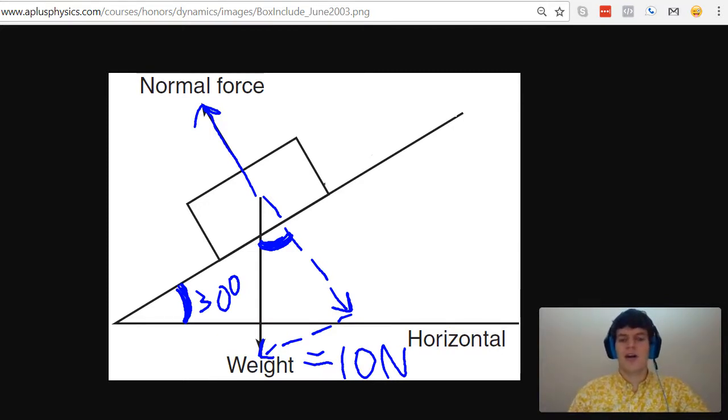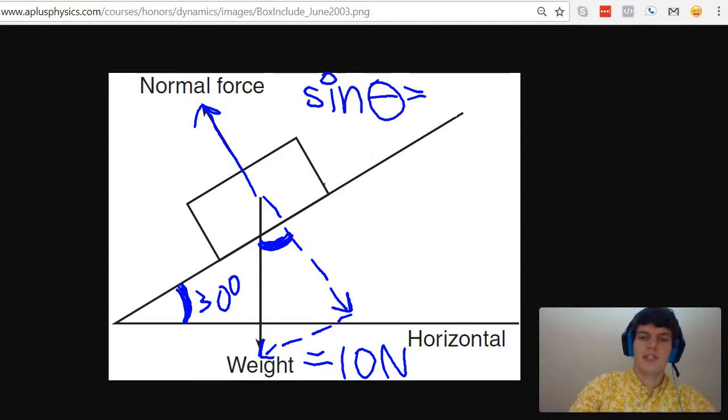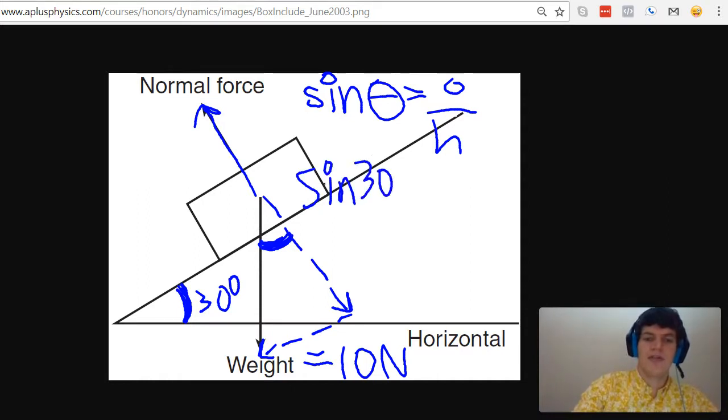Now let's remember our SOHCAHTOA rules which would tell us that sine of angle equals opposite divided by hypotenuse. In this case my hypotenuse is 10 and my angle is 30, so let's just plug in those units. Sine 30 degrees equals opposite divided by hypotenuse which is 10 newtons.